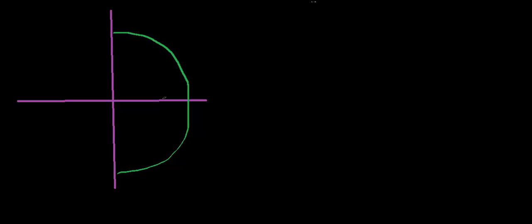Now it doesn't have to be a semicircle — it could be a quarter circle — but the idea is going to be exactly the same. Each point on this semicircle rod is still going to produce a net electric field at the origin. This rod has a radius r, and every point on this curvature is the same distance from the origin. That's a requirement for these types of problems.